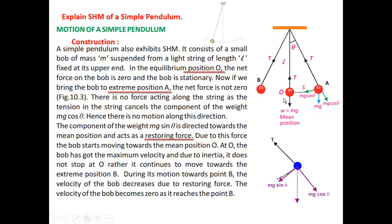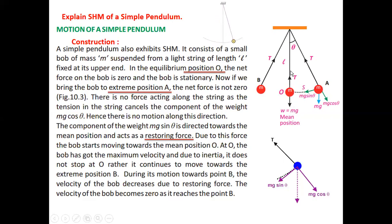When the bob is at rest — at the equilibrium or mean position O — the net force on the bob is zero and the bob is stationary. The weight of the bob acts vertically downward and the tension in the string acts vertically upward. Both forces have the same magnitude and opposite direction; they cancel each other, so the net force on the bob at the mean position is zero.